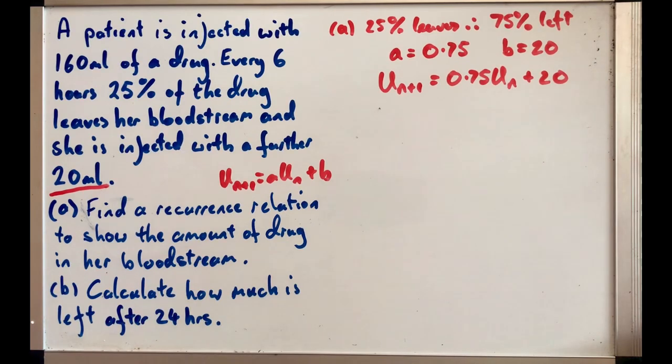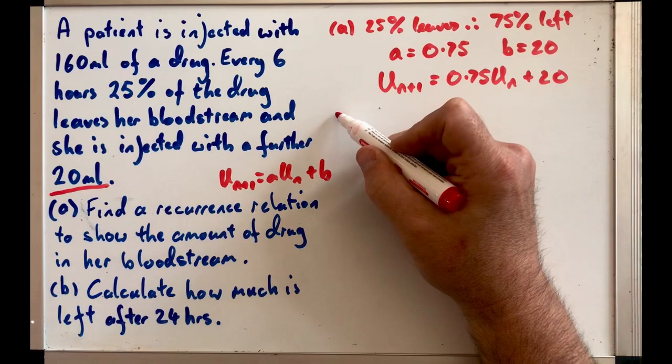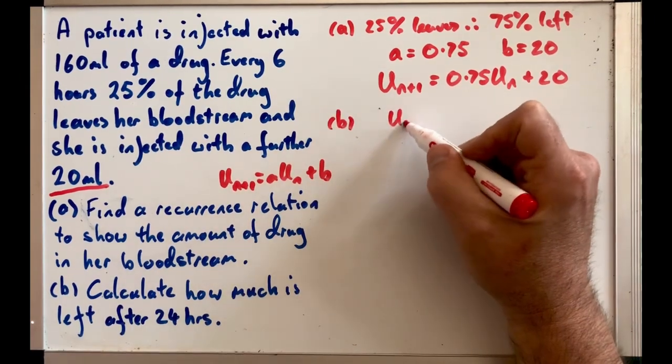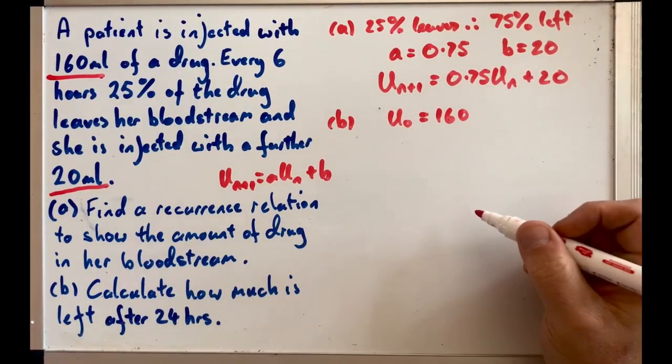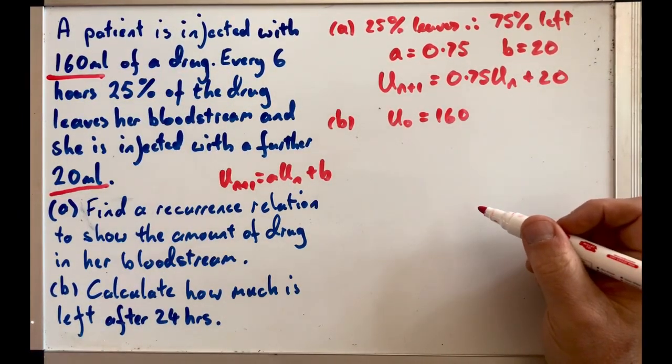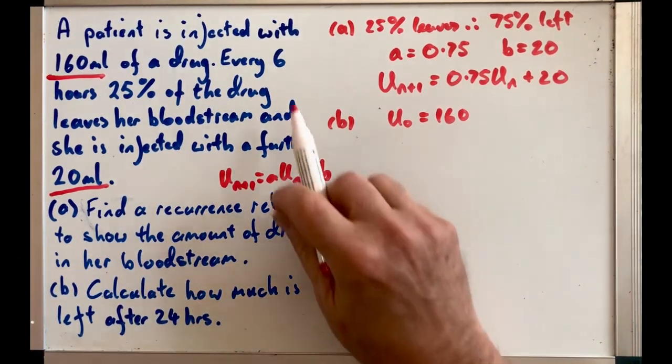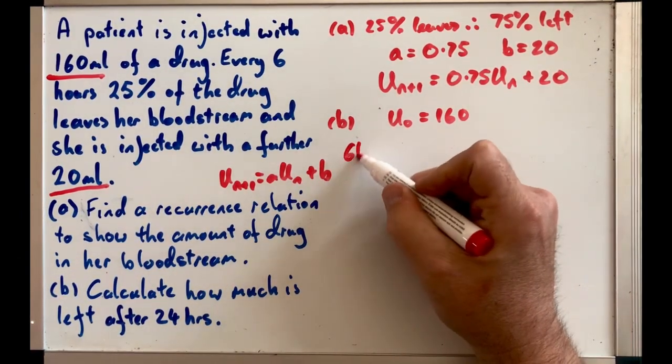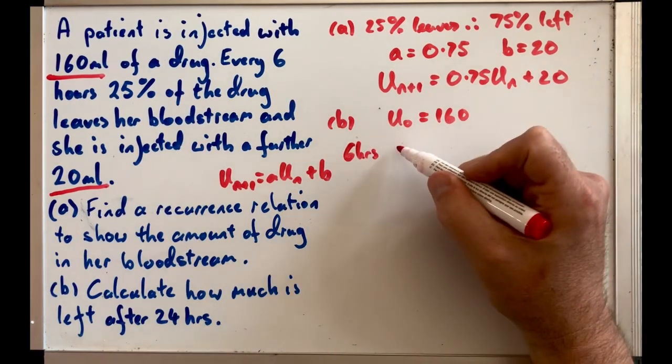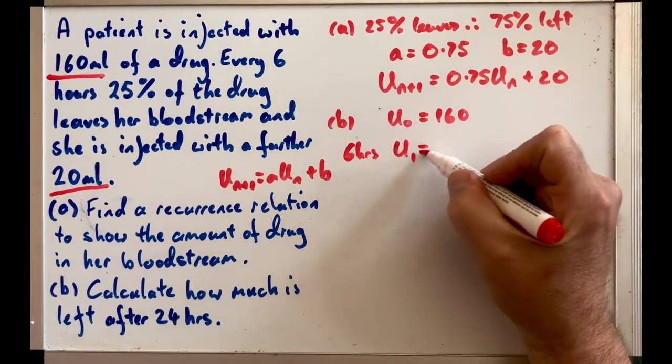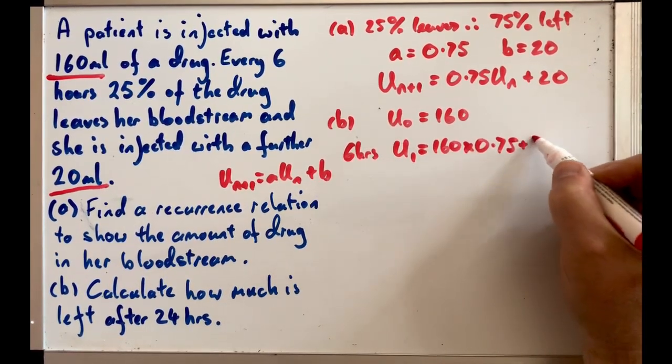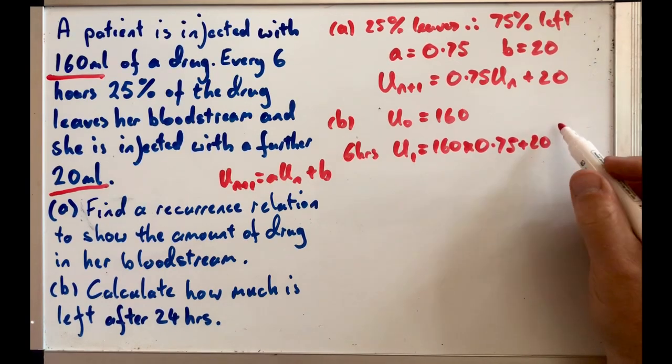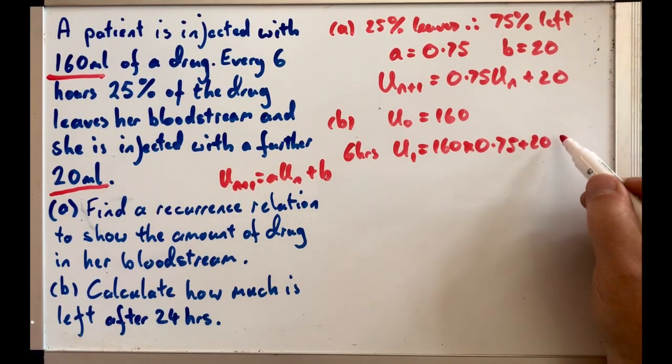Now the next bit is they wanted to know how much was left after 24 hours. Well we know we start off with 160, that's because that is what they injected with at the start. Now to work out what there was after 6 hours, so after 6 hours, U₁ would be equal to 160 times 0.75 plus 20. If I work that out it gives me 140 milliliters.